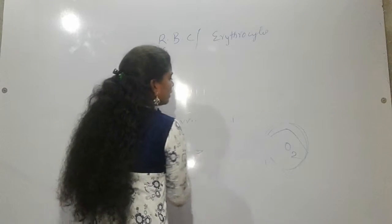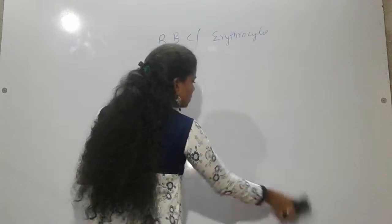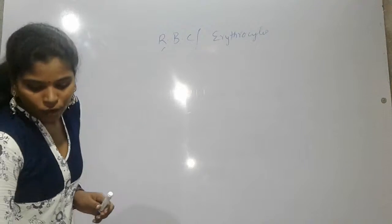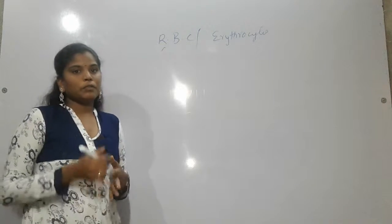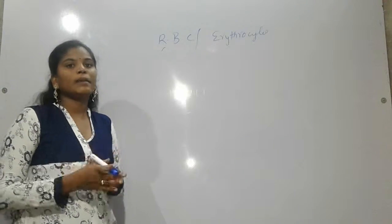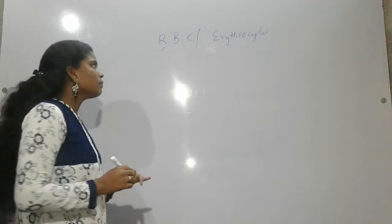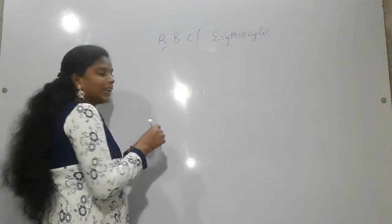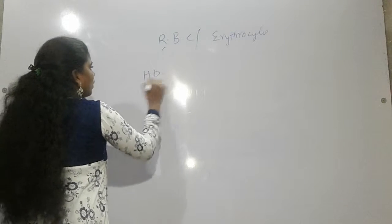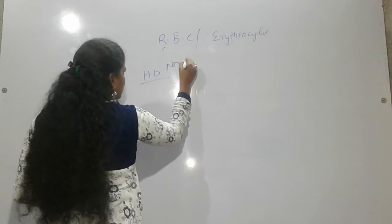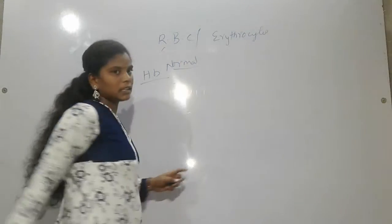Then, how we will be calculating our hemoglobin? Hemoglobin is very important. Because for a human, for a healthy human, there will be a minimum or a maximum. I will tell you the normal levels of hemoglobin first.